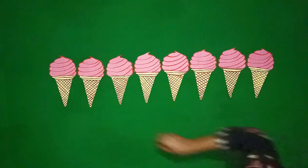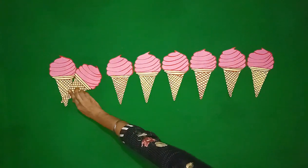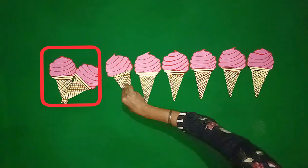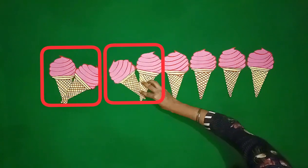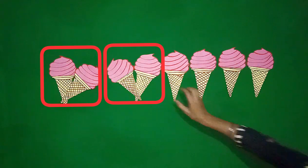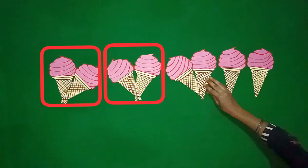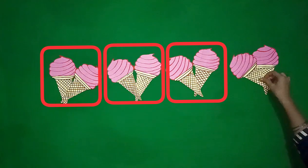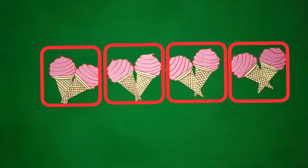There is 1 group of 2 ice creams. Now, we will make another group of 2 ice creams. Now, we will make 1 more group of 2 ice creams. We will make another group of 2 ice creams.